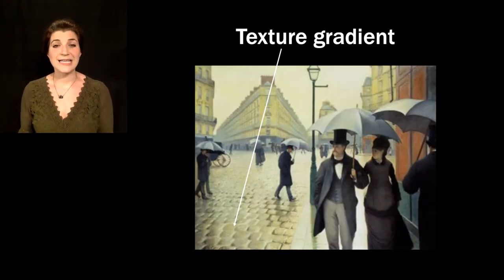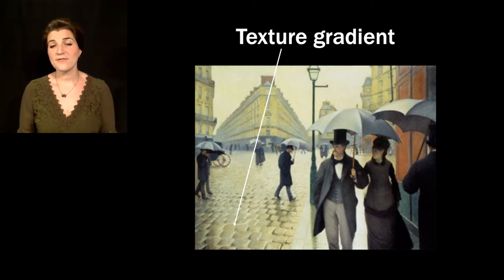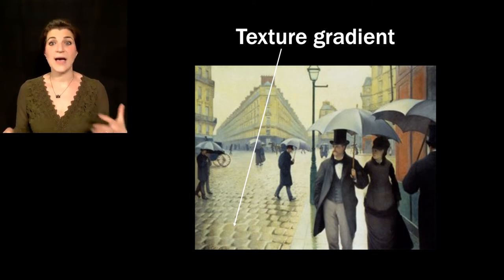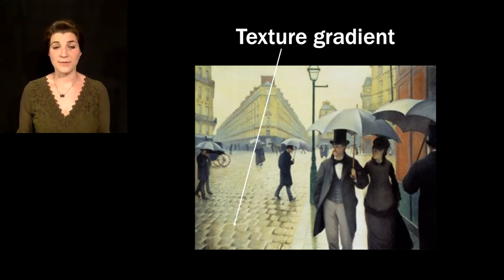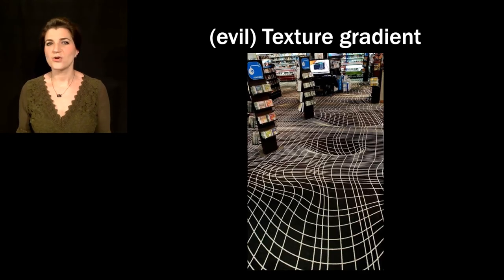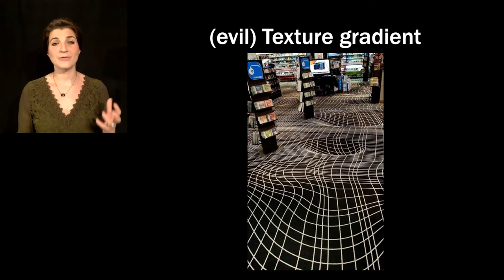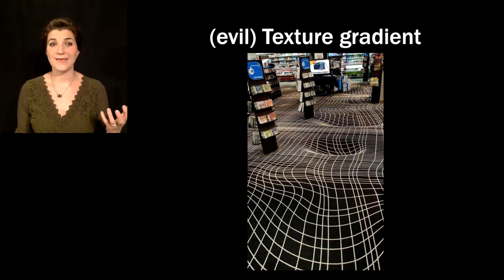The third cue is texture gradient. Pictorial cues are used heavily by painters and 2D artists trying to convey depth. In one picture, the spacing of cobblestones gets more densely packed as they get farther away, contributing to our perception of depth. Texture gradient can also be used for evil, as in a store's carpet—the ground is flat, but the fact that it doesn't look flat tells us something about how we use texture cues to judge depth and distance.